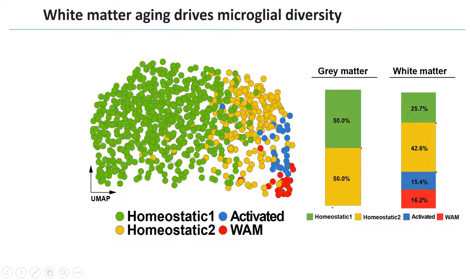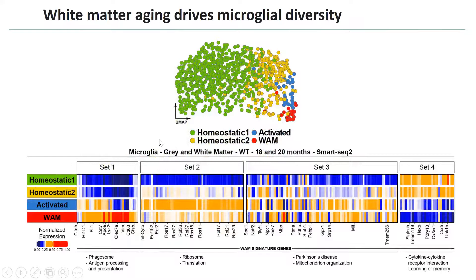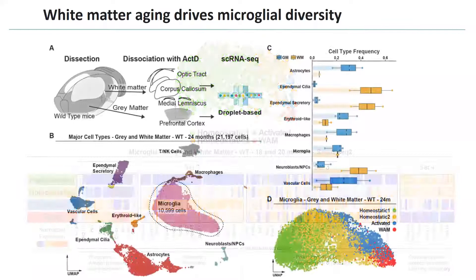Using this approach, we distinguished four clusters of microglia: two homeostatic clusters and a small proportion of activated microglia enriched in the white matter. We called one population white matter-associated microglia (WAM) because it was specific to the aging white matter. The transcriptional signature of WAMs includes downregulation of homeostatic genes and upregulation of genes involved in phagosomes, antigen processing, and translation — very similar to the DAM response.